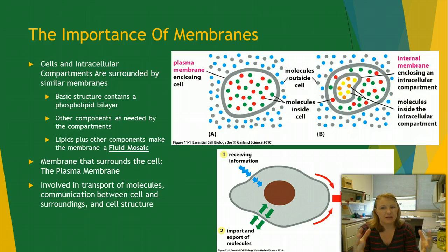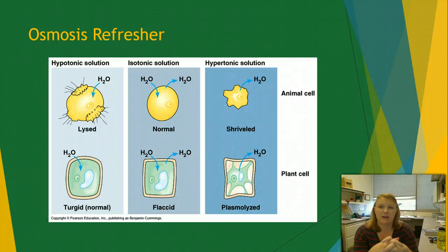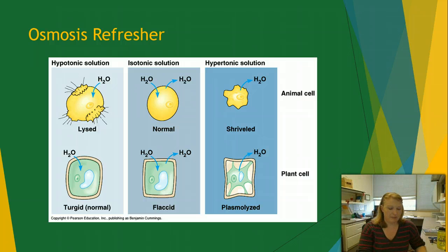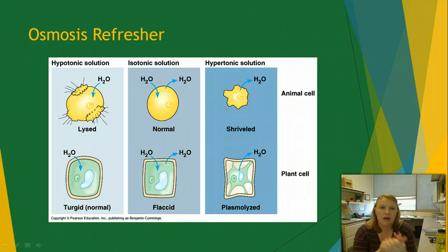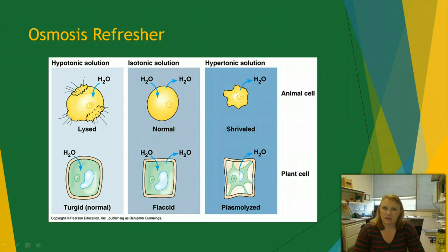Now we're going to do a little refresher on osmosis. You should be very familiar with this by now because you should have done some experiments on it in your previous class. Osmosis is important because water can freely move across the cell membrane. This is why the environment the cell is in is so important, and why physiological saline and correct salt concentrations in our blood matter so much — it can alter our cells dramatically.